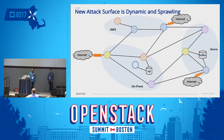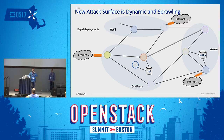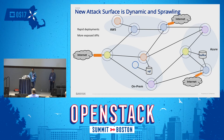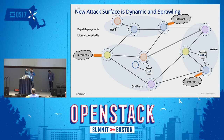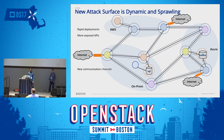Looking at the new attack surface microservices introduce: first, there are rapid deployments happening to each component individually, at a rate commensurate with each team's velocity, making it very hard for a security product to track what's going on. Second, breaking one application into small pieces blows up the number of entry and exit points — more exposed APIs — and access to existing SQL and Kafka systems also increases.